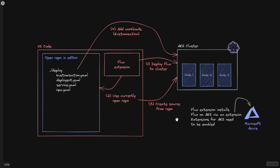By using your currently open repo, you can tell Flux to create a source on the cluster that informs Flux about the repository — in this case a public one on GitHub — to use. Normally you would create a source from the command line, but here you can just right-click and say create a source from the repository you're currently in. Once the source is created and Flux can see the data on GitHub, you can start adding workloads, typically customizations. A customization is basically a pointer to a folder that contains YAML files.